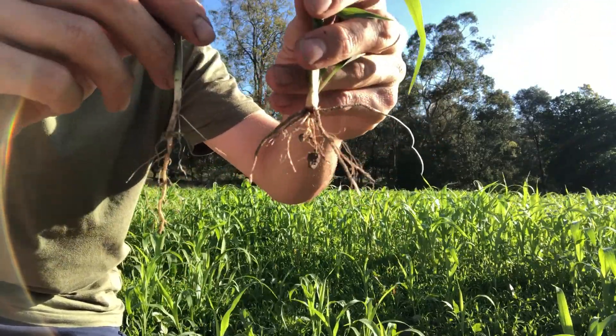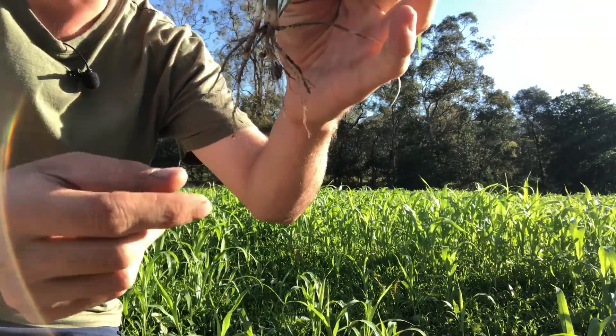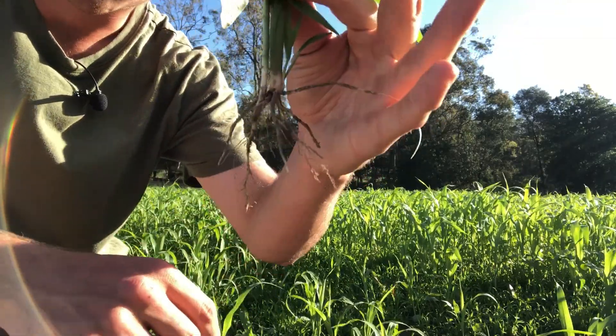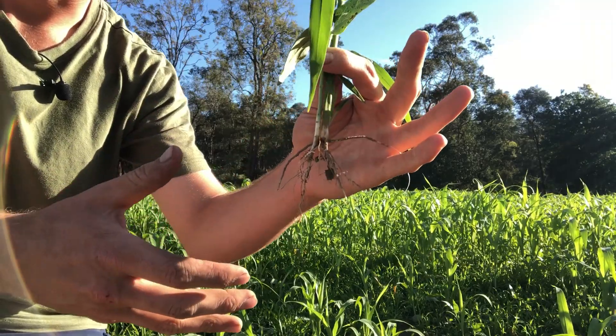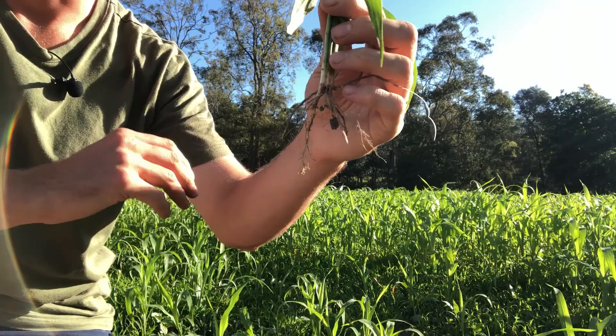As the cowpea grows, this tap root will go further down into the soil profile. Essentially, these plants are accessing different layers of nutrients within the soil.